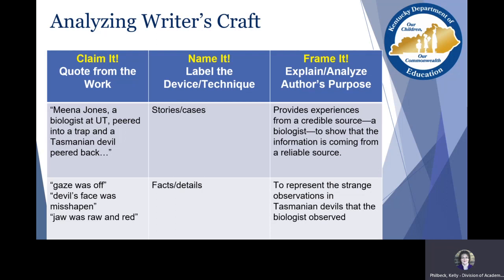Looking at the other things we underlined: 'its gaze was off, its face was misshapen, its jaw was raw and red' — those are facts and details from our evidence list. They represent specific observations the biologist is making. Lots of times in writing you get generalizations; these specific facts and details make the appearance of the Tasmanian devil much more apparent to the reader — they can see what's really happening — versus a student writer just saying 'it looked weird.' These specific pieces of evidence help the reader really see what's happening.